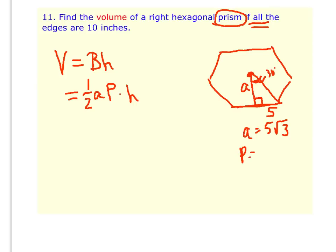And the perimeter, since all the sides are 10 and there are 6 sides, the perimeter is 60. So 1/2 times 5√3 times 60 times the height of the prism, which is 10.